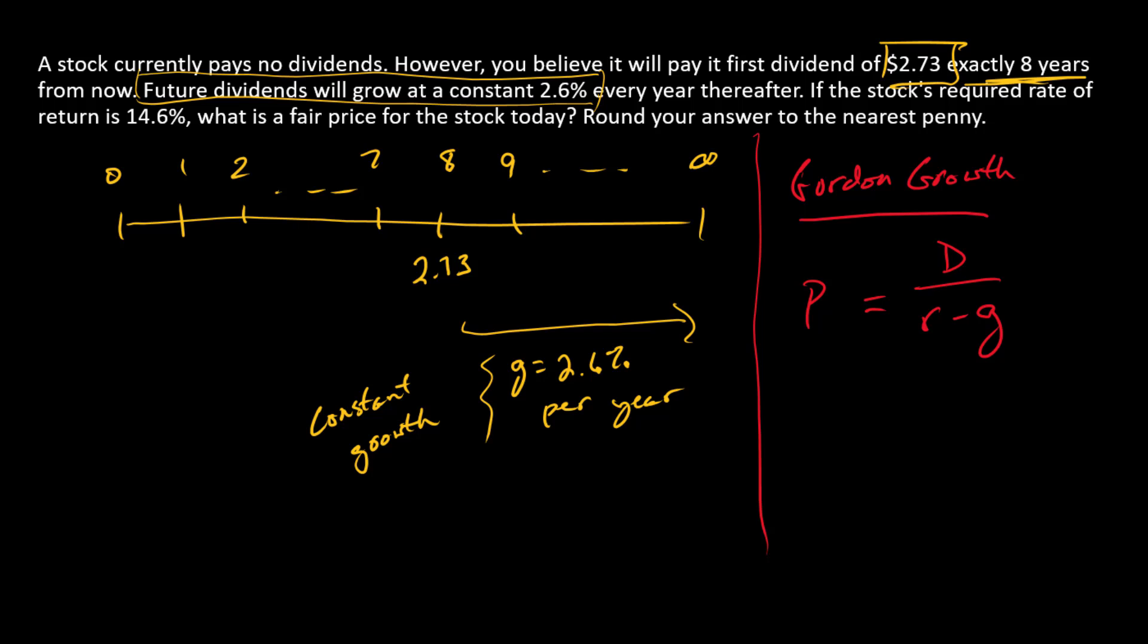Let's just go and see where the first dividend is. First dividend is at time eight, so let's put an eight there. There's going to be D8. And so when is this price going to be true? It's going to be the price at time seven. This is going to take us to a two-step problem.